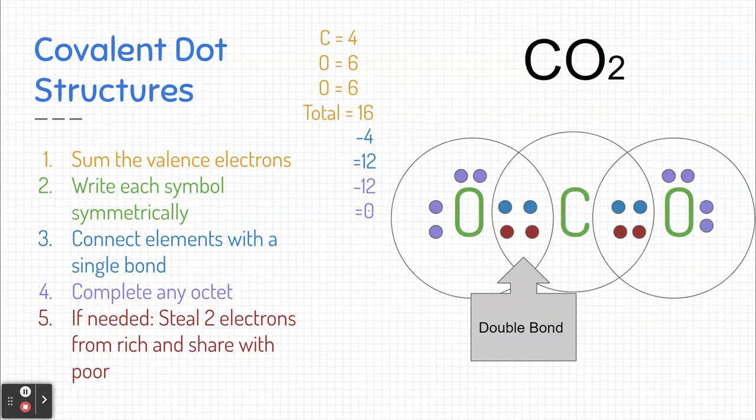Three, connect the elements at least with a single bond first. Realize that you might need to move some electrons around later, but you at least need to have one bond between the elements.